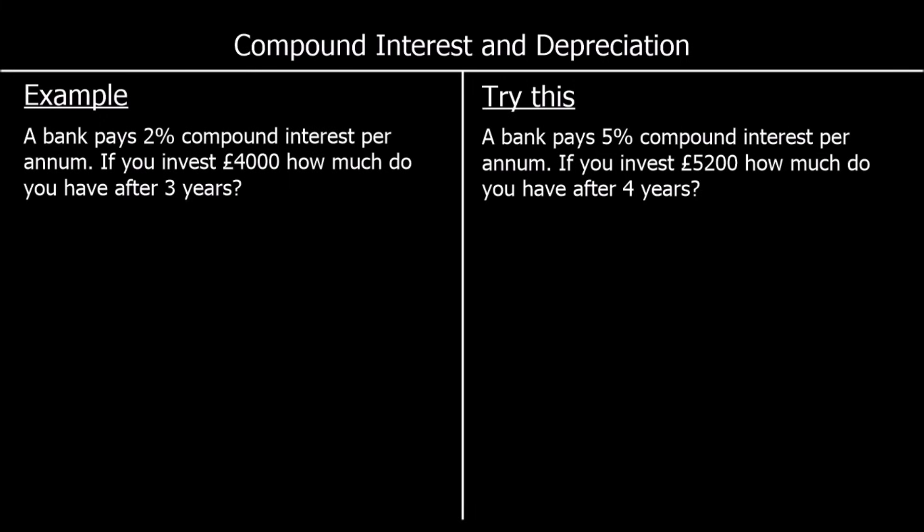With compound interest, in the first year we get 2% of £4,000. But then in the second year, we've got that interest on top of our £4,000, so it's 2% of a higher amount. And then in the third year, that interest from the second year is added on as well, and we get 2% of an even higher amount.